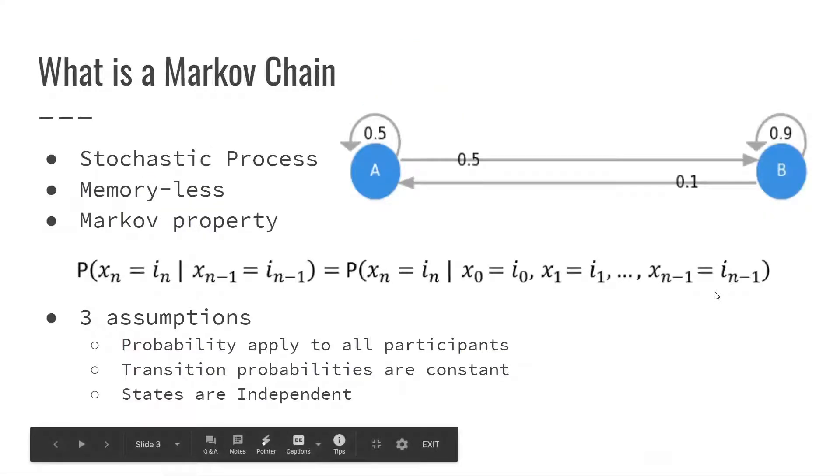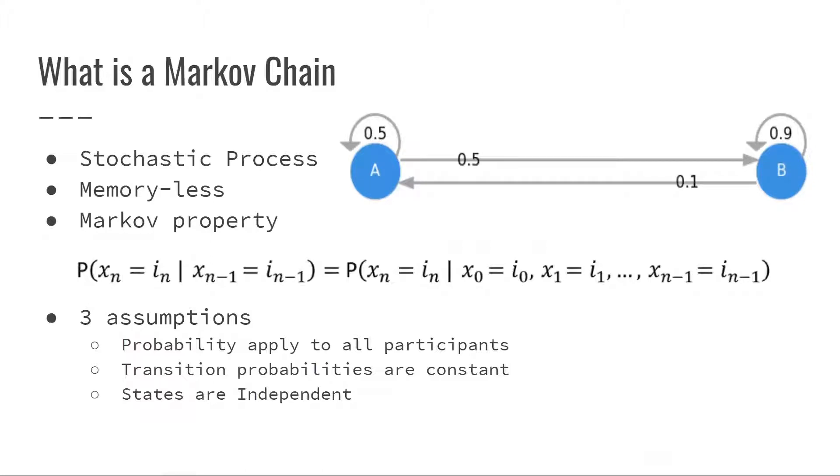So what is a Markov chain? A Markov chain is a stochastic process, which is basically a family of random events, which means one thing will lead to another. Markov chains are memory-less, which means that future states only depend on the current state, which saves a lot of time. This is also known as the Markov property.